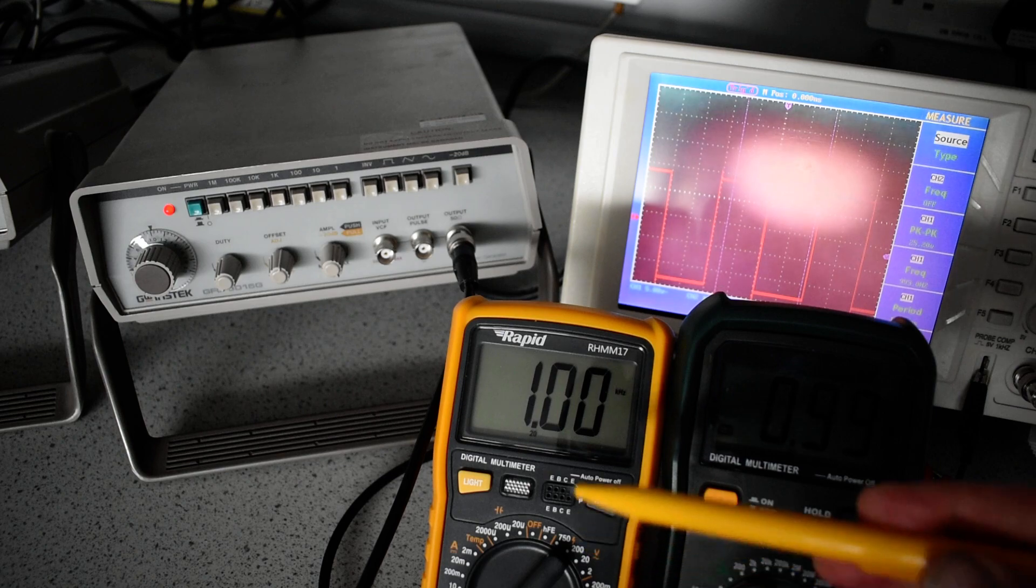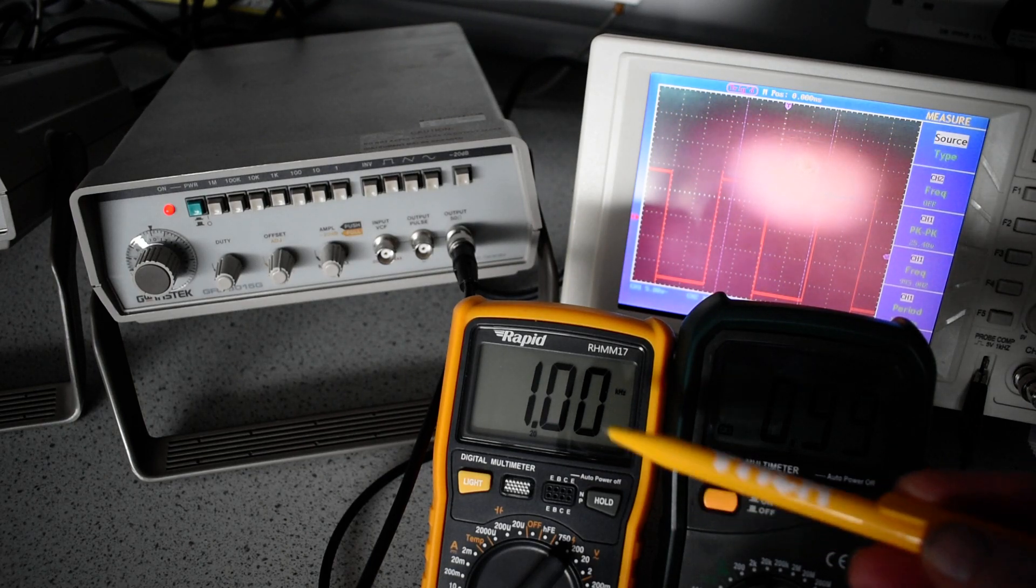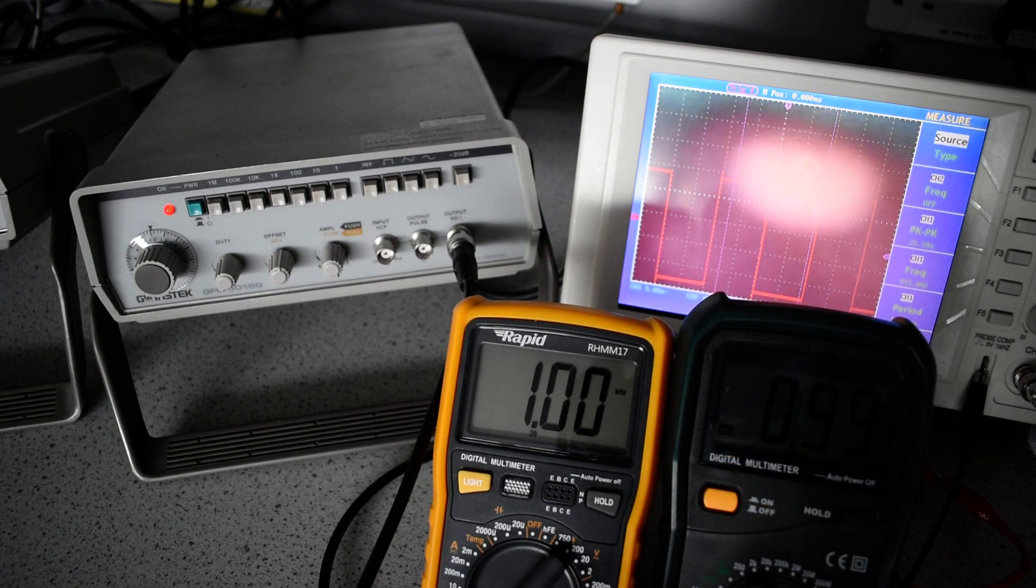The frequency measuring capability is determined of an accuracy of 1.5% plus 5 digits. At 1000 Hz, 1.5% is plus or minus 15 Hz. 5 digits would give an uncertainty of another plus or minus 50 Hz. So it's given us an uncertainty of plus or minus 75 Hz. Unfortunately, that is wider than the range of 1050 between 950.